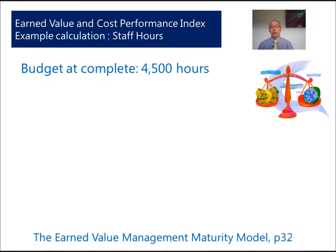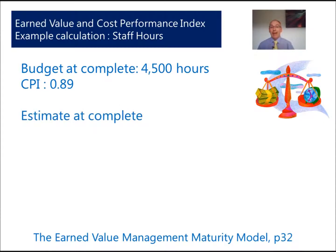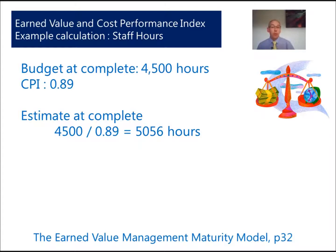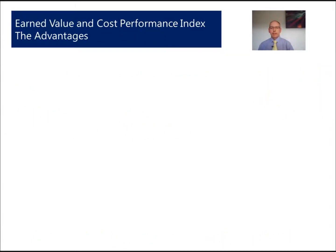For example, assume a budget at complete of four thousand five hundred hours — estimated from a bottom-up estimate based on a work breakdown structure. We've calculated our CPI early in the project, so our estimate at complete is four thousand five hundred divided by 0.89, giving us five thousand and fifty-six hours. This tells us we're going to need more resources to deliver the project, unless our scope is going to change.